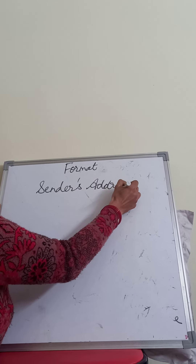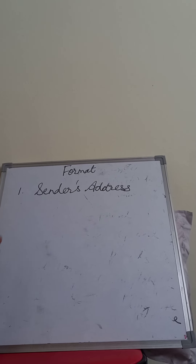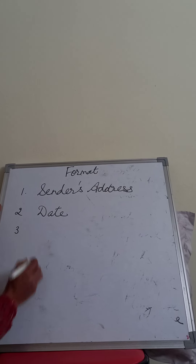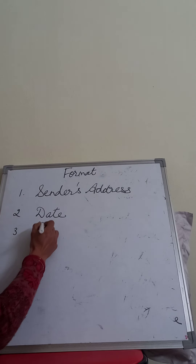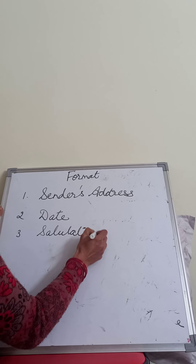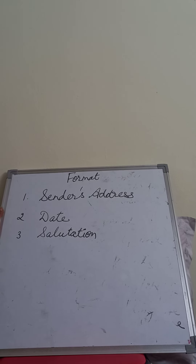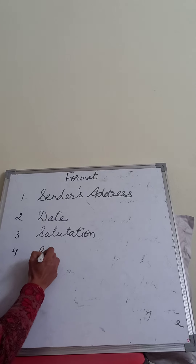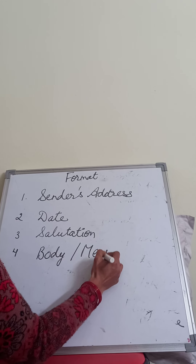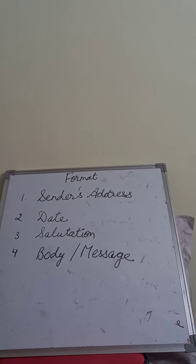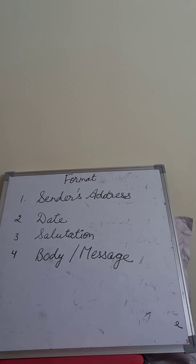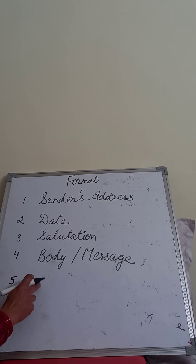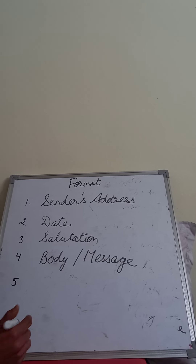Whoever is writing the letter, the sender's address comes first. After that is the date. This is given in your book also. The third thing is the salutation. Salutation means: dear grandma, dear grandfather, whatever you feel comfortable with — that is the salutation, whoever you are writing the letter to. After that is the body, or we can say message. The body includes any number of paragraphs. It is very important to write the body in at least 2 paragraphs — minimum 2 paragraphs are required here.